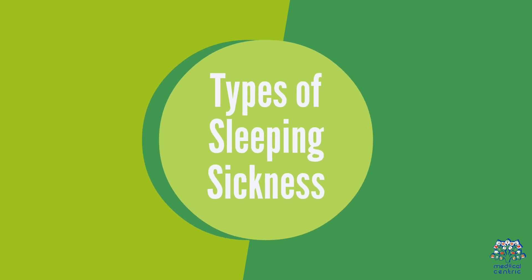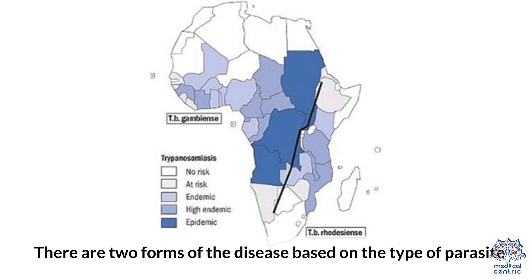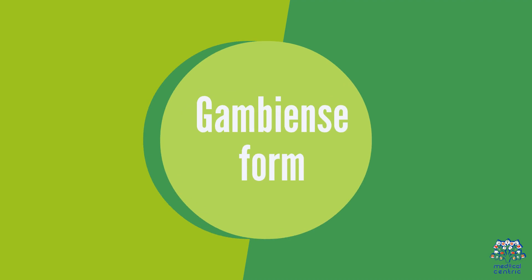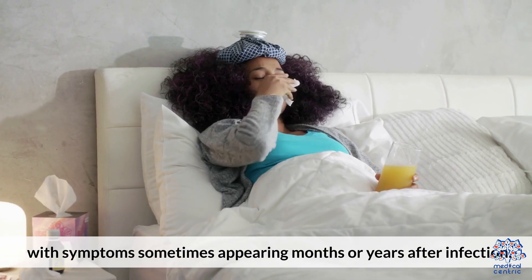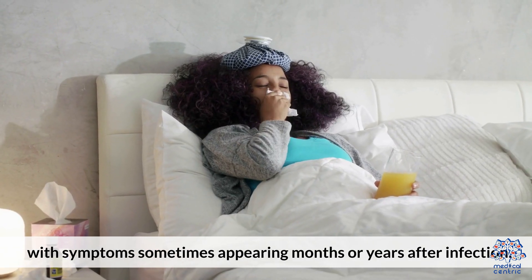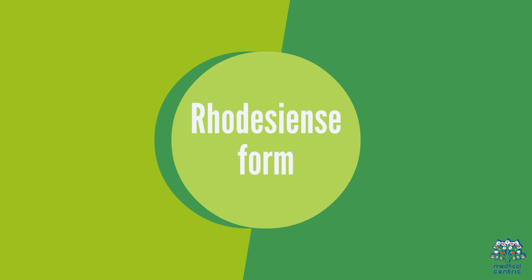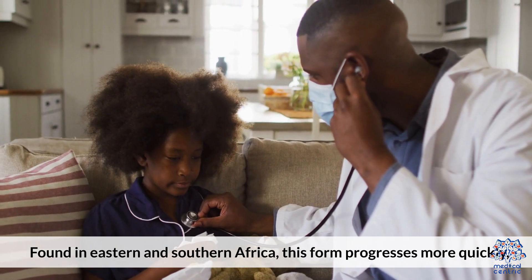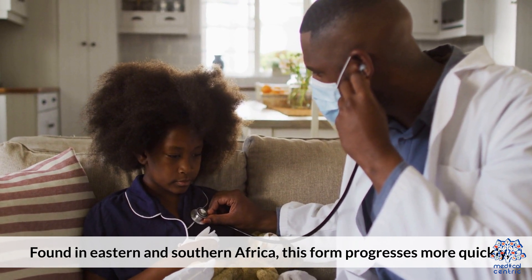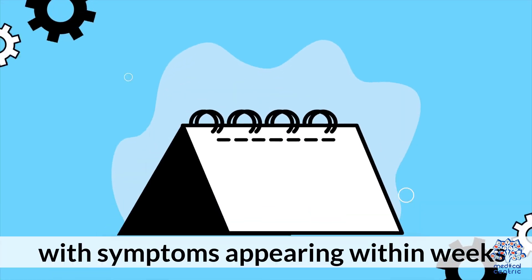Types of Sleeping Sickness. There are two forms of the disease based on the type of parasite. The Gambiense form, found in Western and Central Africa, progresses slowly, with symptoms sometimes appearing months or years after infection. The Rhodesiense form, found in Eastern and Southern Africa, progresses more quickly, with symptoms appearing within weeks.